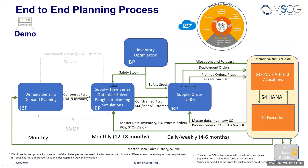In the order-based layer you have the option to model customers or not. In the demo we are modeling customers to do forecast consumption at customer level. If that's not a requirement, you can model at the SKU-plant level and get much better solver performance. Here we generate planned orders, purchase requisitions, stock transfer orders, and send them to S/4HANA. You can also do deployment orders for short-term distribution, and allocations and forecast. Once in S/4HANA, we do ATP allocations and schedule orders to minimize transitions, and all transaction data comes back to the order-based layer.